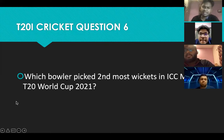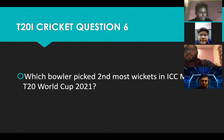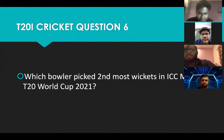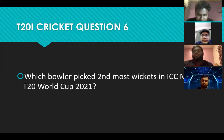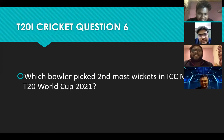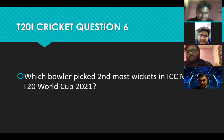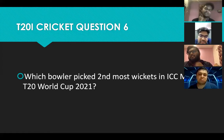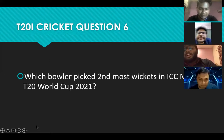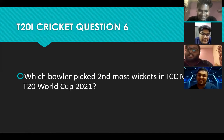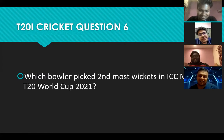Sixth question: which bowler picked the second most wickets in the ICC Men's T20 World Cup 2021? There were two bowlers — if you can name one, we'll give the 10 points. I know it's obviously your good friend — yes. Adam Zampa — correct! Yes, 10 points. I was about to say Hasaranga, then I reread the question — it said second most — then I came to Zampa.